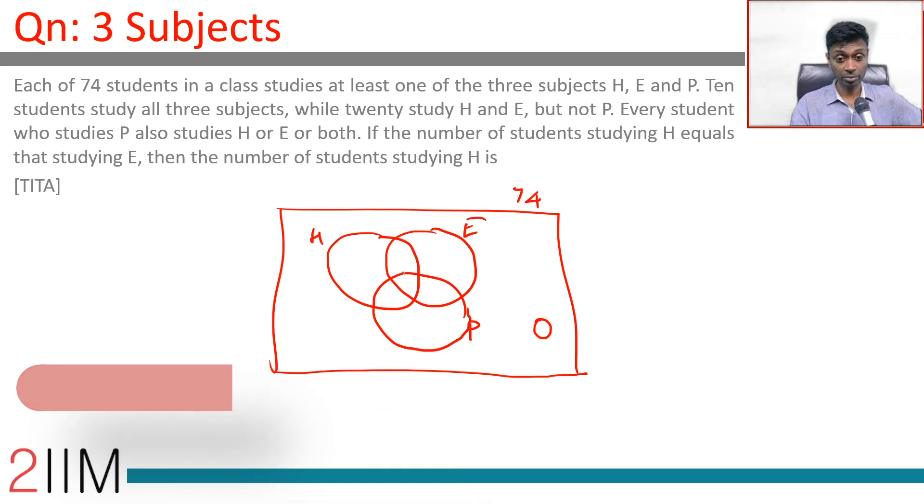10 students study all three subjects. I can just put this in here. Well, 20 studied H and E but not P. That means here.